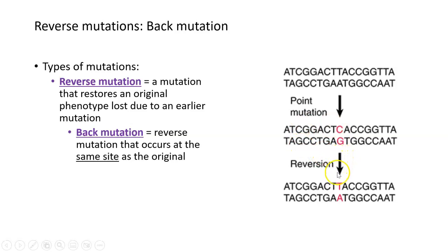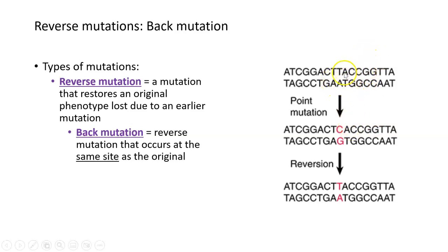Then there is what we refer to as a reverse mutation or reversion, where the mutant gene goes back to normal. This mutation — back from C to T and G to A — occurs at the exact same place, the exact same site. Looking at the resulting sequence and the original sequence, you notice they're identical. There was a forward mutation to convert the wild type gene into a mutant, and then a back mutation — a complete reversal of that sequence back to normal — and as the sequence goes back to normal, so does the function of the gene.